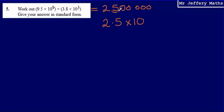decimal point back. 1, 2, 3, 4, 5, 6. So 2.5 times 10 to the power of 6.